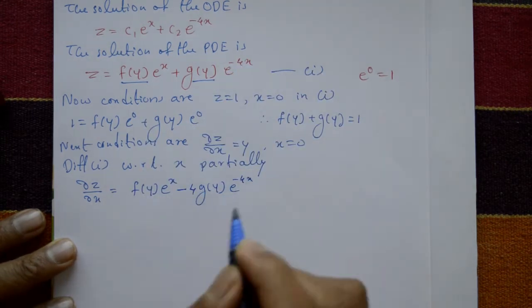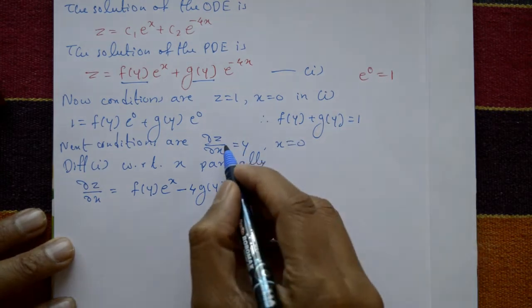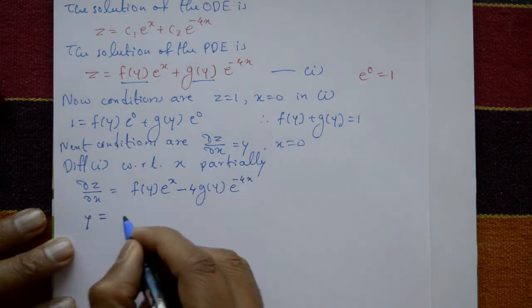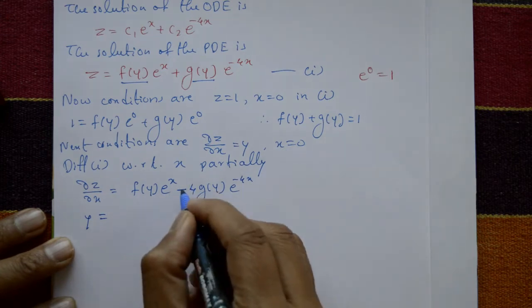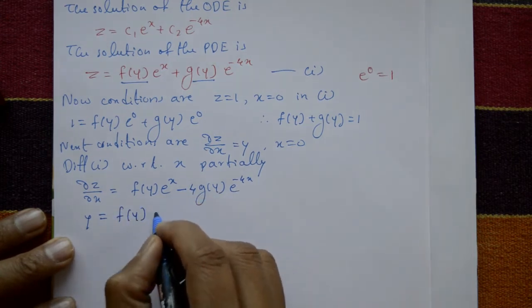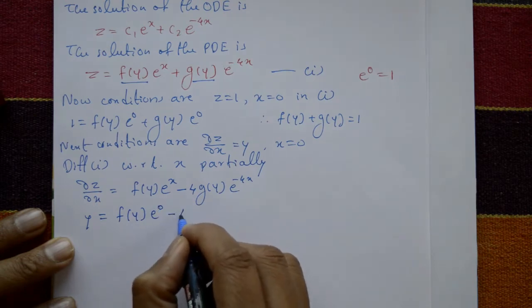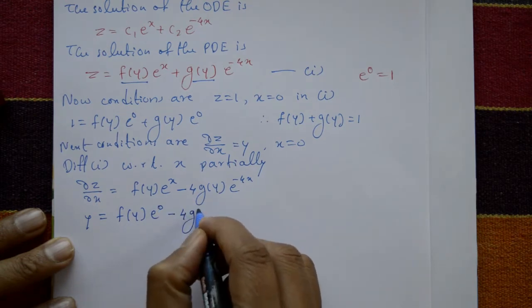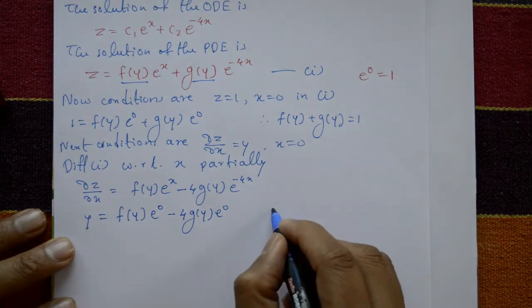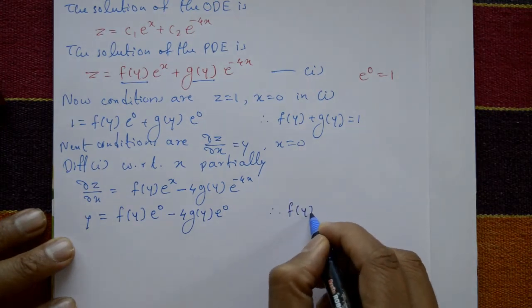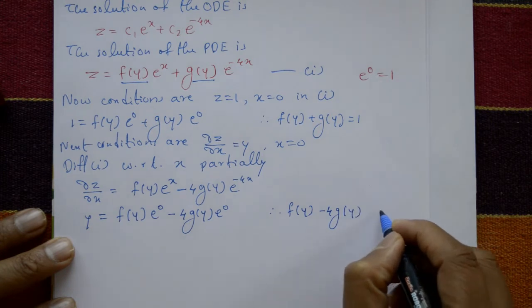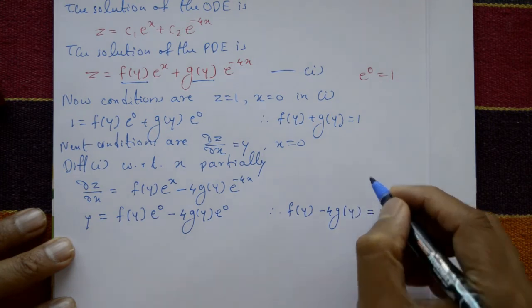Now apply the condition ∂z/∂x = y at x = 0: f(y)·e⁰ − 4g(y)·e⁰ = y. Since e⁰ = 1, this gives f(y) − 4g(y) = y.